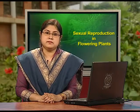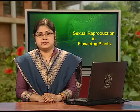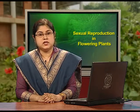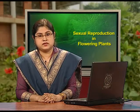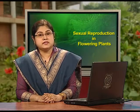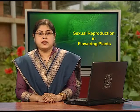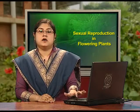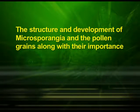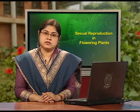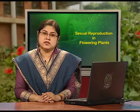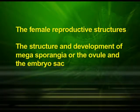Now I have come to the end of the first part of this lesson on sexual reproduction of flowering plants. Today, we have discussed the flower, its role as an organ of sexual reproduction in flowering plants. We have seen the reproductive parts of a flower — the stamen and the pistil. We have also covered the structure and development of microsporangia and the pollen grains along with their importance. In the next episode, we will focus on the female reproductive structures and will cover the structure and development of megasporangia or the ovule and the embryo sac.